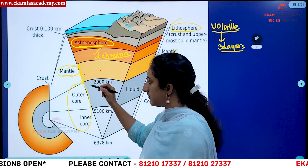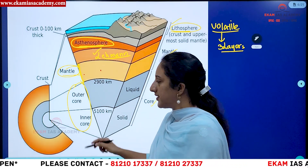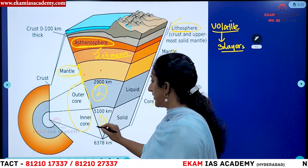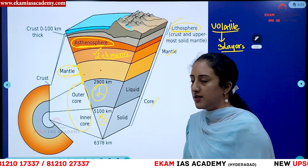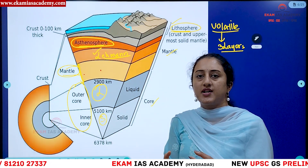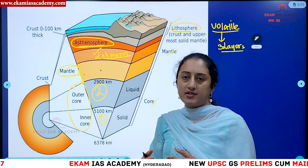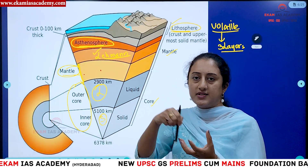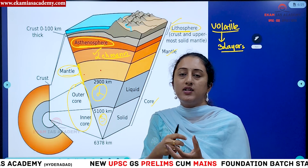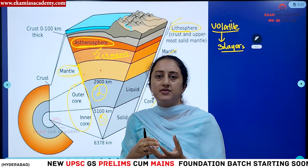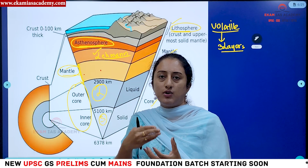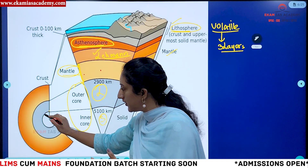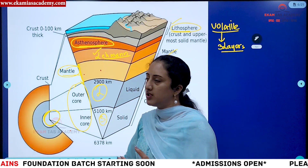The core is divided into two parts: the outer core, which is in a liquid or molten state, and the inner core, which is in a solid state. The inner core is almost the size of Pluto, which is now regarded as a dwarf planet. This inner core always spins approximately one degree more than the Earth's natural spinning — meaning while Earth spins 360 degrees in a day, the core rotates slightly in advance, indicating it rotates at a higher speed than the Earth.